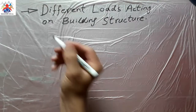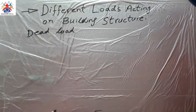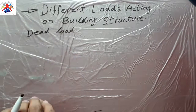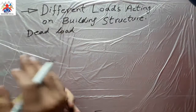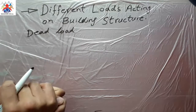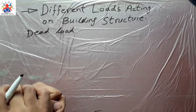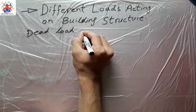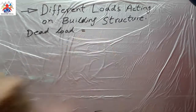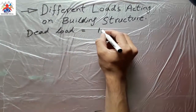First of all we have dead load. Dead load is a load which never moves. For example, when you construct a building, whatever the load of the building would be, it will remain the same, and it is called dead load.